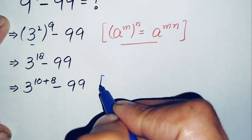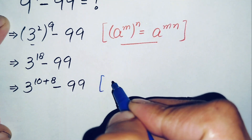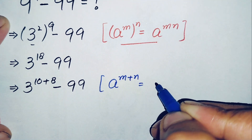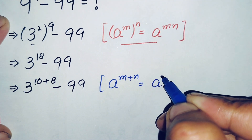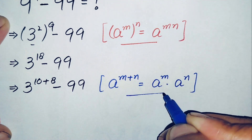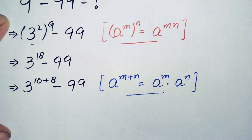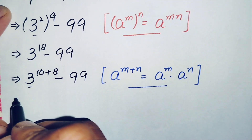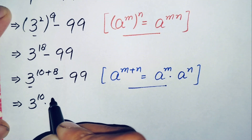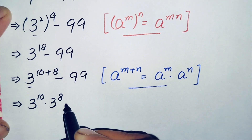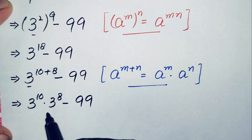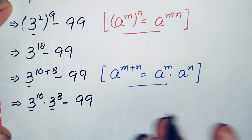Using this exponential identity, this first term becomes 3 to the power 10, times 3 to the power 8, minus 99. Now we will try to find out the value of 3 to the power 8 and 3 to the power 10 separately.